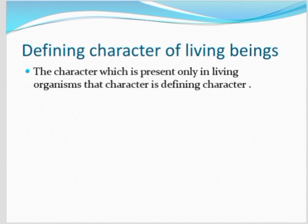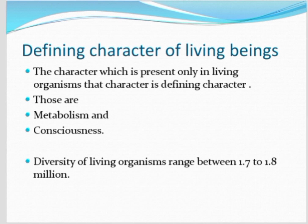Among these characteristics, the defining character is the one present only in living organisms. There are two such characters: metabolism and consciousness. Without a cell and cytoplasm, metabolic reactions do not take place, and consciousness is seen in all living organisms. These two are the defining characters. The diversity of living organisms ranges between 1.7 to 1.8 million organisms.